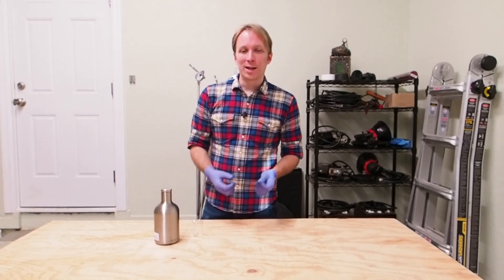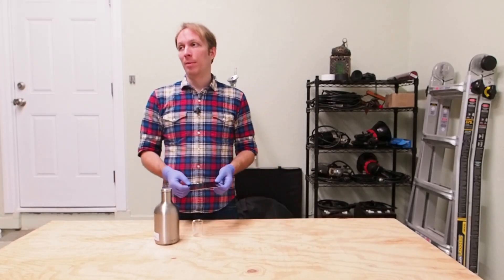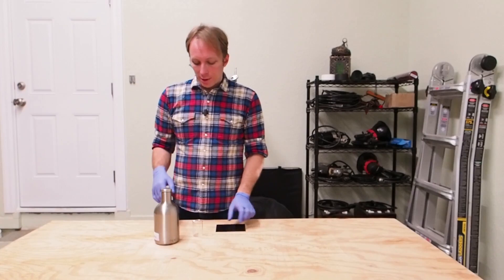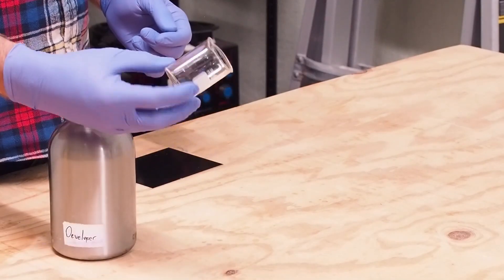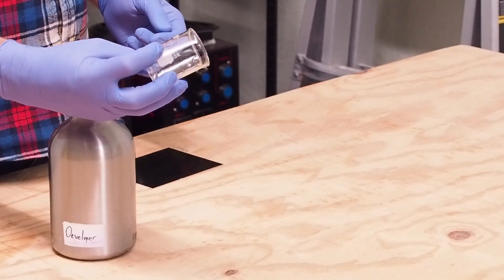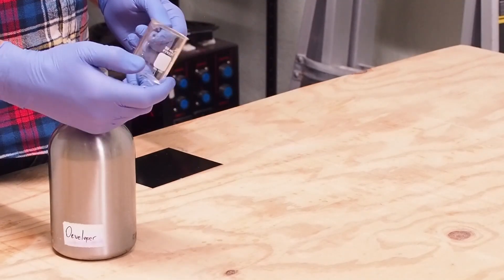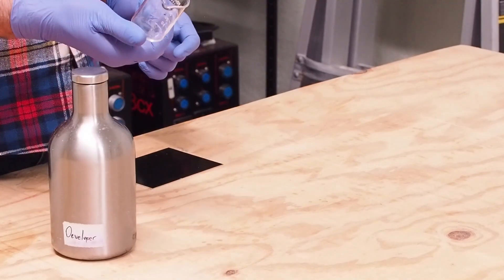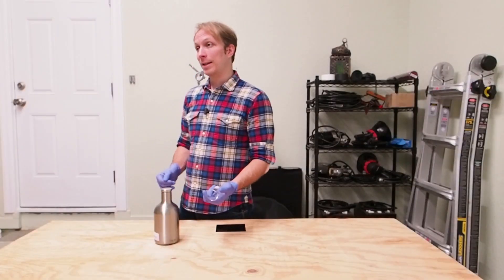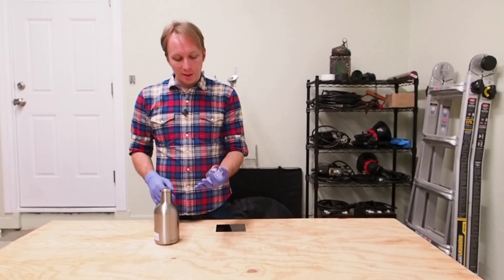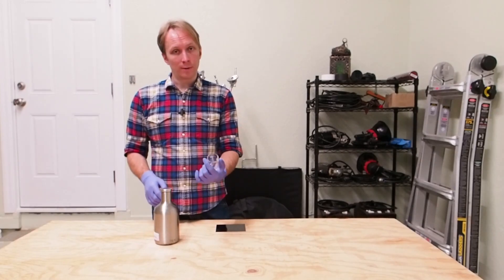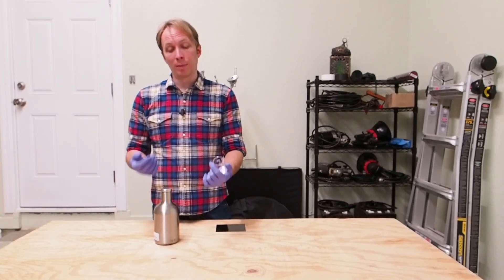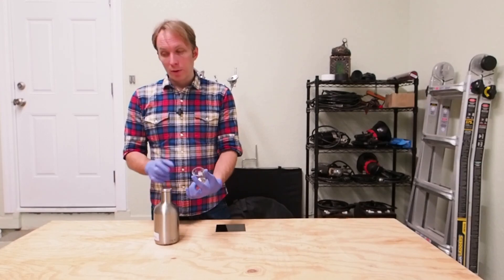So here's a quick separate primer on developing a plate. I like to pour developer out of a small beaker like this, a 50ml beaker. This gives me enough developer for anywhere from a 4x5 up to an 8x10. I usually put a little bit of developer in here, typically 10 to 15ml for a 4x5, more if I'm shooting a bigger plate.